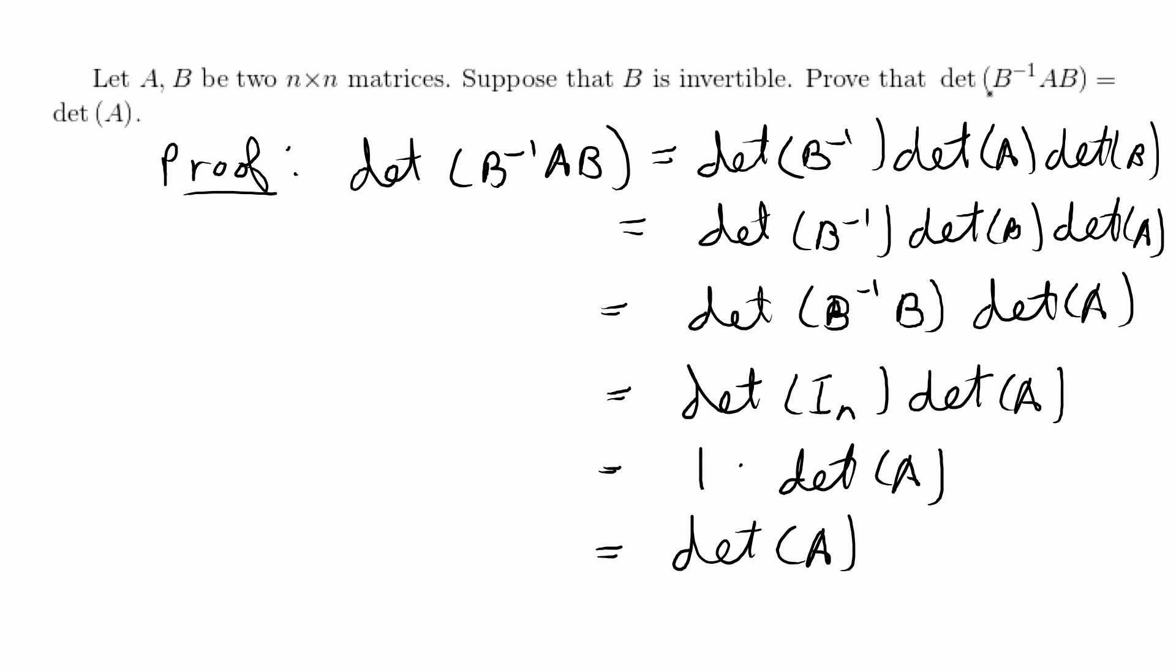And now we have the left-hand side, the determinant of B inverse AB is equal to the right-hand side, the determinant of A. So we're done with this proof.